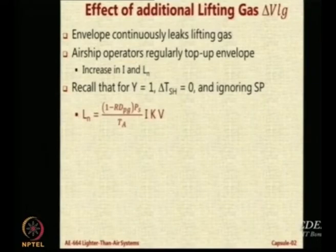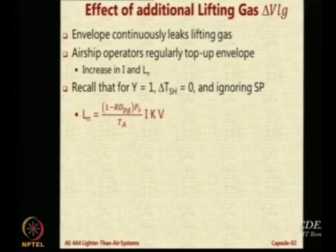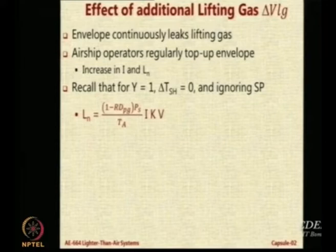So, if you assume Y equal to 1 — meaning the whole envelope is full of pure gas — and if you ignore TSH and also ignore super pressure (just knocking off these terms for simplicity), then the net lift is equal to (1 minus Rd_pure_gas) times PS times I times K times V divided by TA.